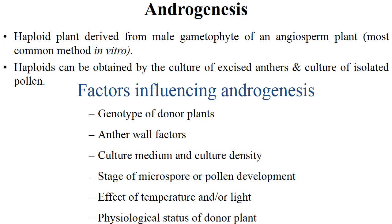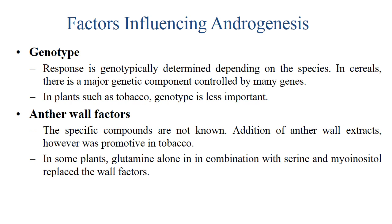There are certain other factors also but these are the major ones. Genotype response is genotypically determined depending on the species. In cereals there is a major genetic component controlled by many genes. In plants like tobacco, genotype is less important. The anther wall factors — specific components are not known, but addition of anther wall extracts promotes androgenesis in tobacco. In some plants, glutamine alone in combination with serine and myoinositol can replace cell factors.